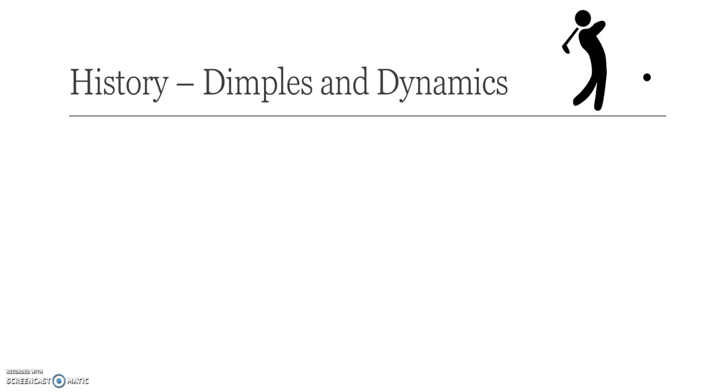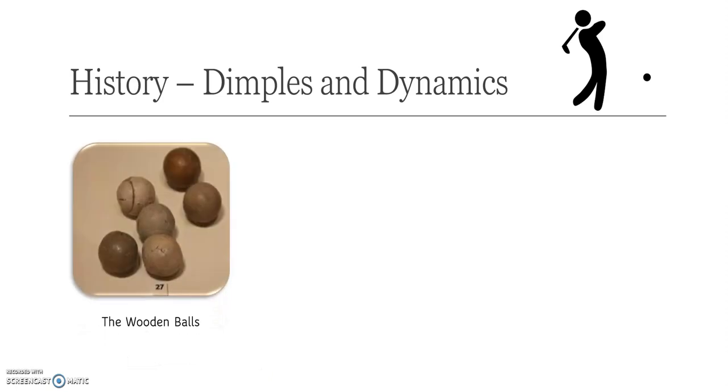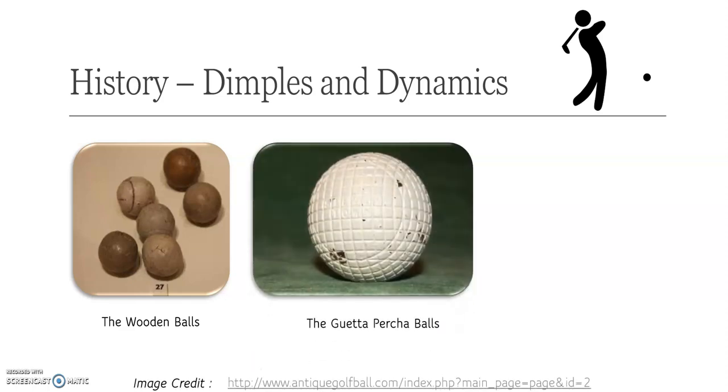Golf balls were originally made from wood as that was the most easily fabricated material available. These wooden balls would travel a distance less than 100 yards, roughly 90 to 91 meters. Then golf enthusiasts did some brainstorming and came up with boiled goose and chicken feathers which were tightly wrapped inside a leather pouch or cover.